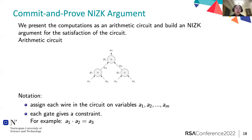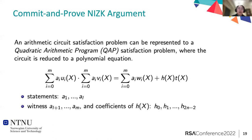To build this NIZK argument, we first represent all these computations as an arithmetic circuit — a circuit with multiplication and addition gates, where all wires are assigned values including old balances, new balances, and transaction values. We then reduce the arithmetic circuit satisfaction problem to a quadratic arithmetic program (QAP) satisfaction problem, which reduces it to a polynomial equation. Our NIZK argument is based on this equation and relies heavily on techniques used by Bulletproofs. The result has similar features to Bulletproofs: communication complexity is logarithmic in the circuit size, verification computation is linear in the circuit size, and we don't need a trusted setup.